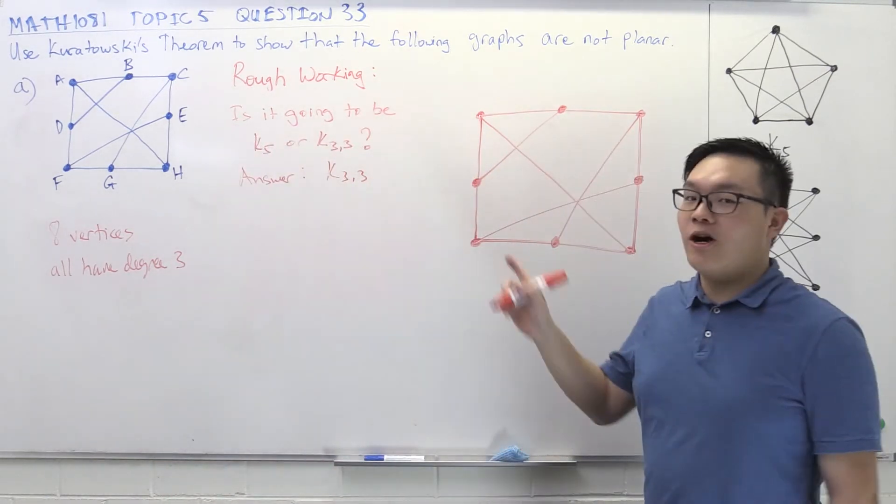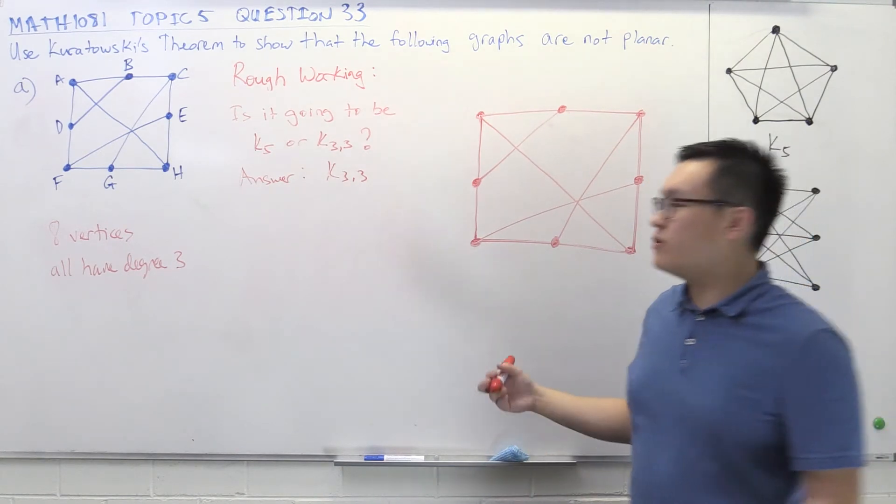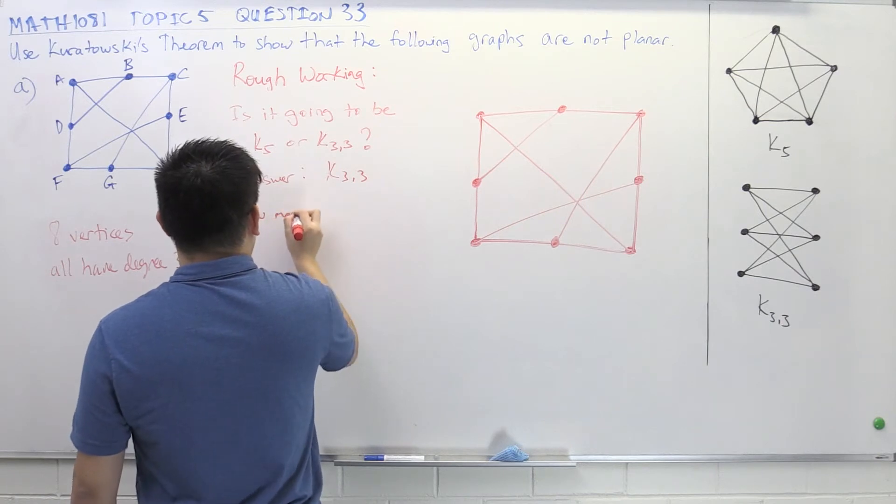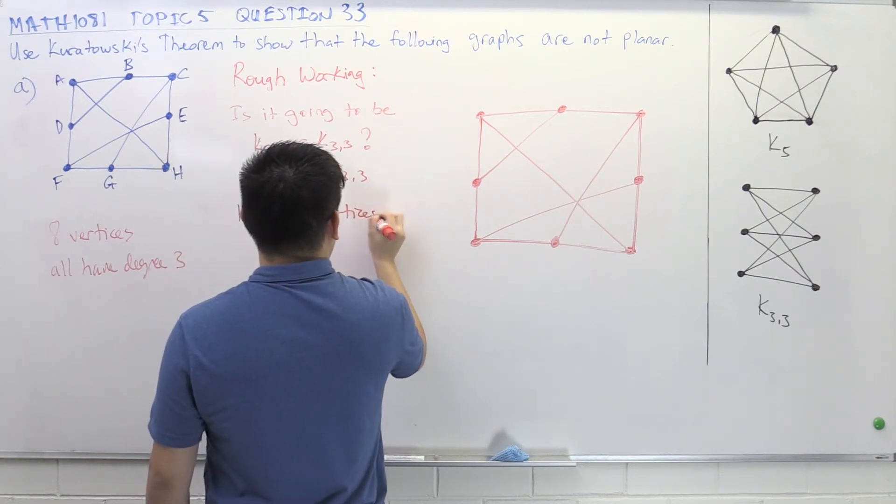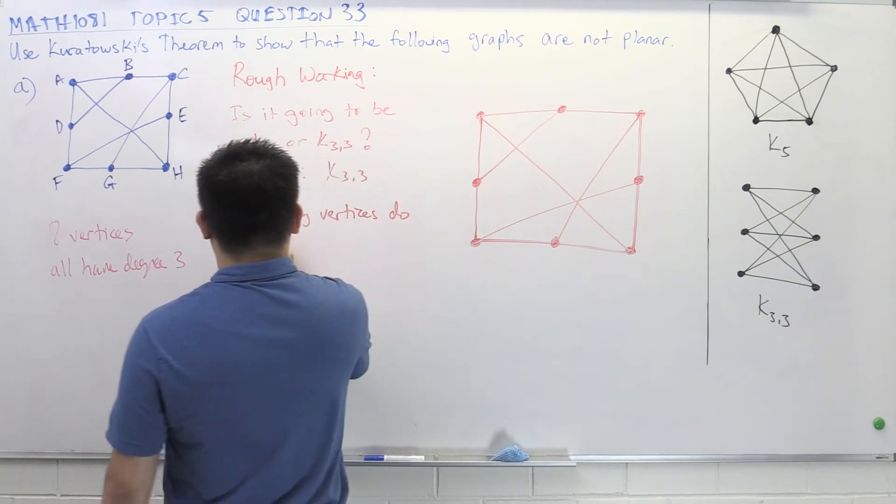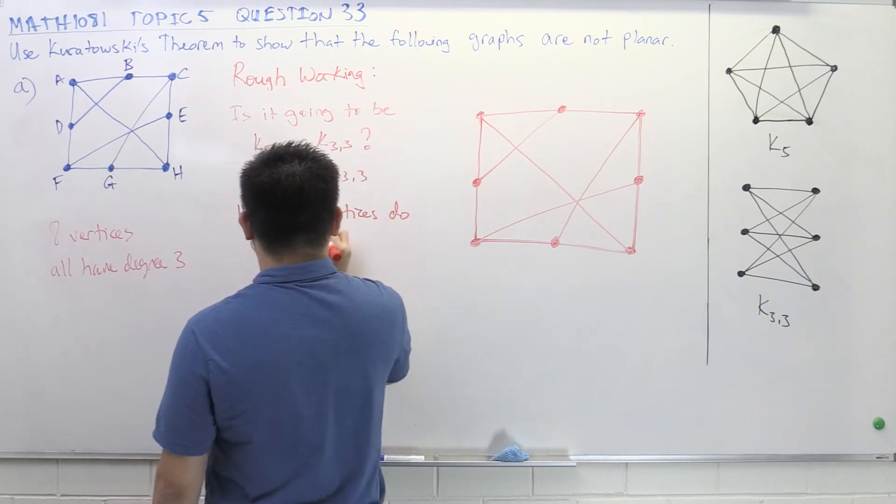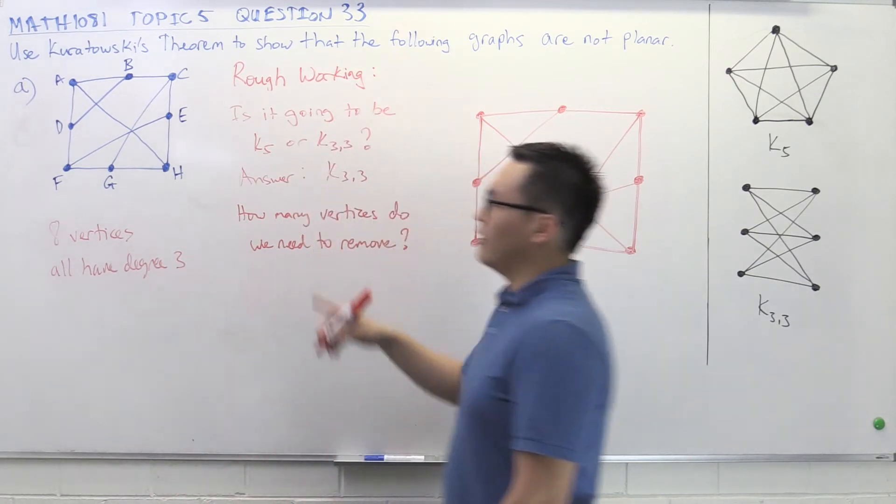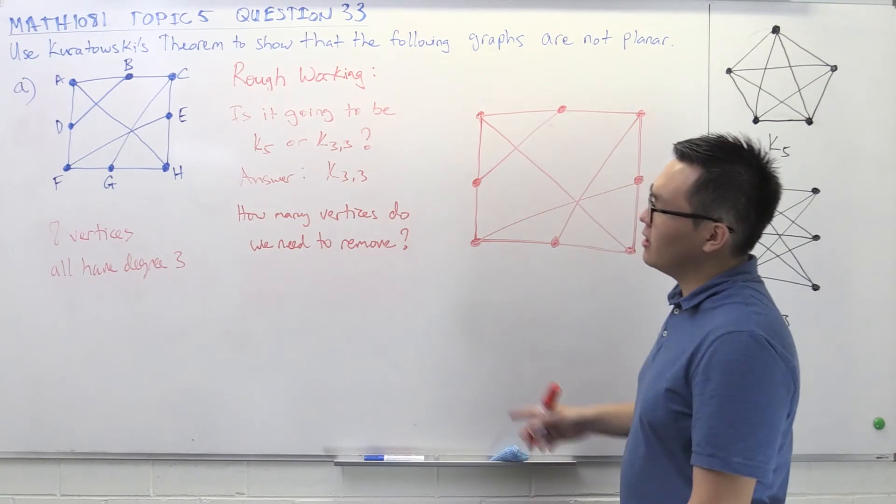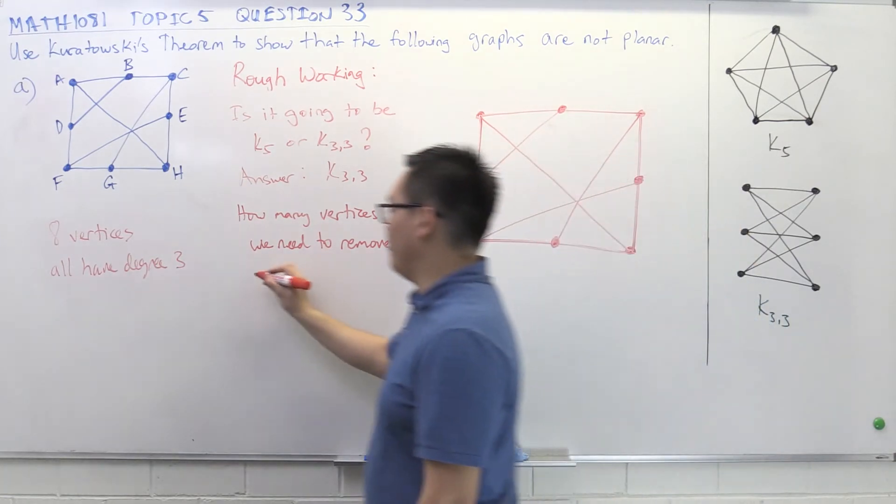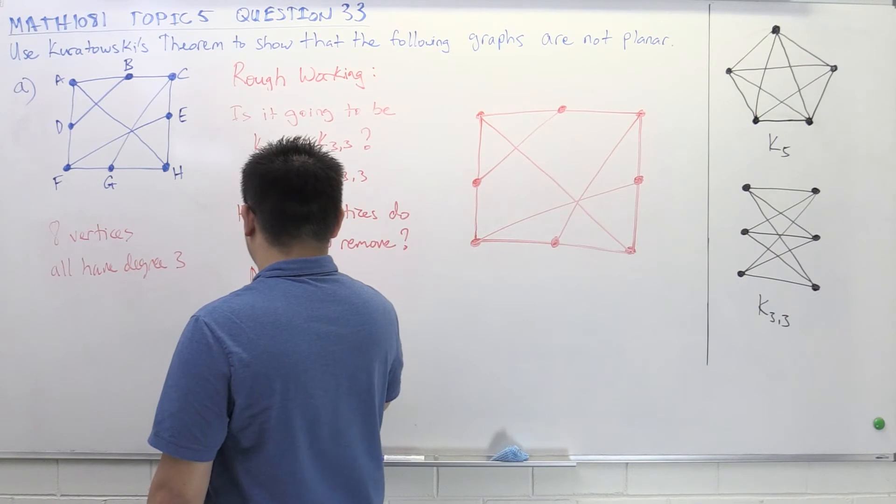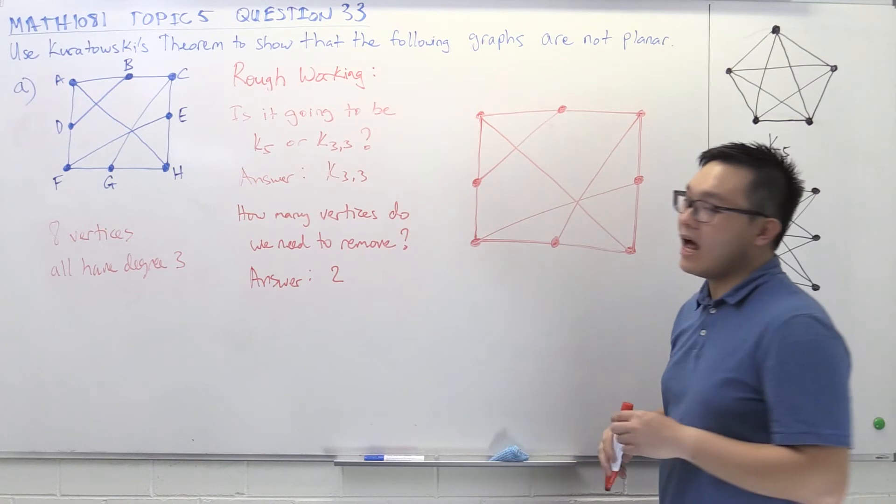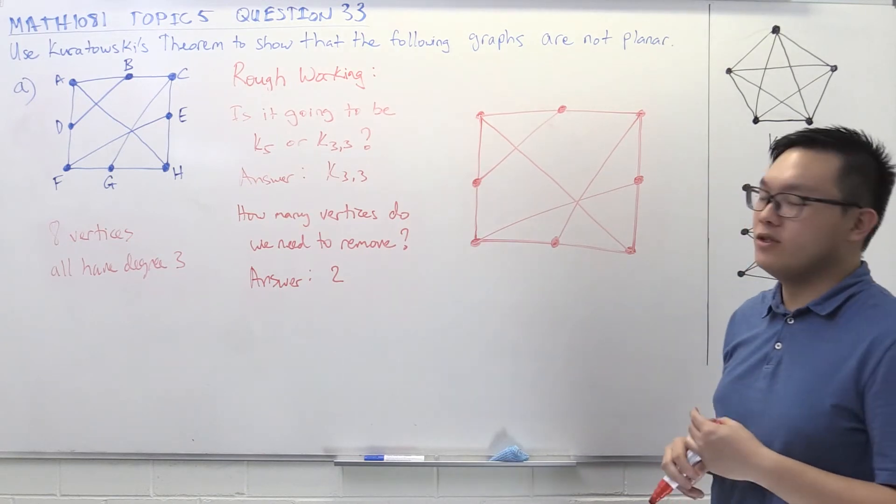So now we know that we're going to end up with a K33. So now that we know what our target is, the next step is to figure out what do we need to lose, what do we need to remove. So how many vertices do we need to remove? Then the graph currently has 8 vertices, the target, the K33 has 6. So we need to remove 2.